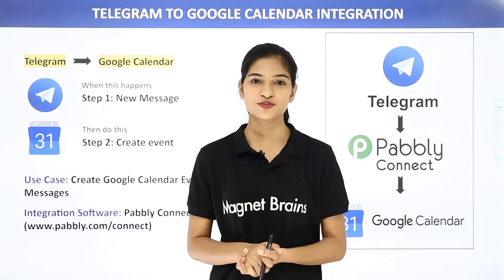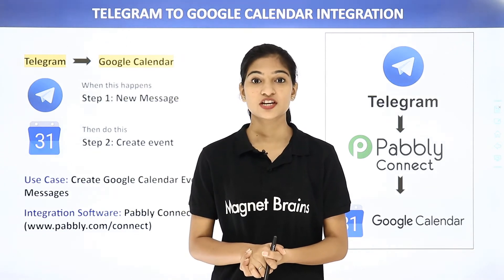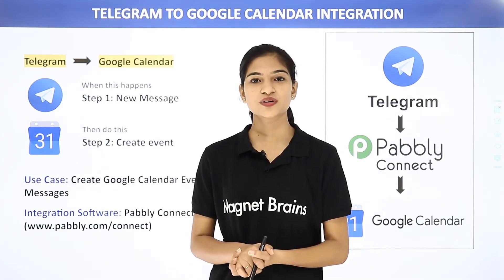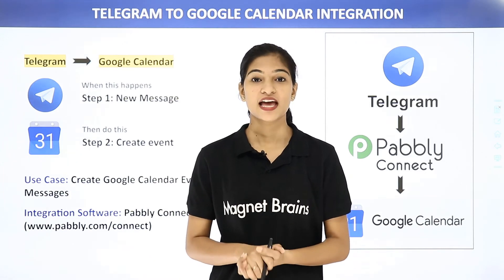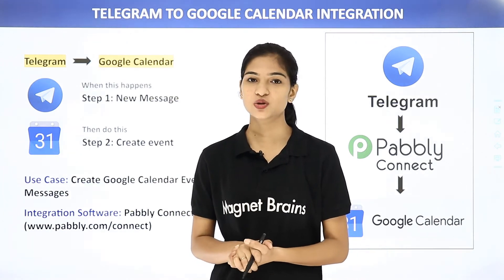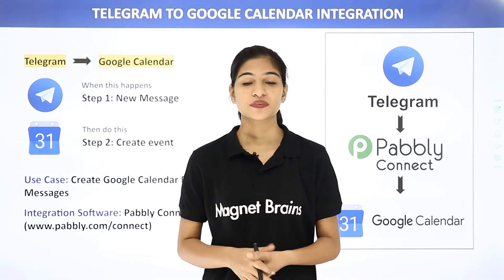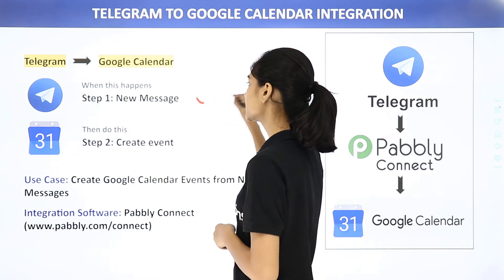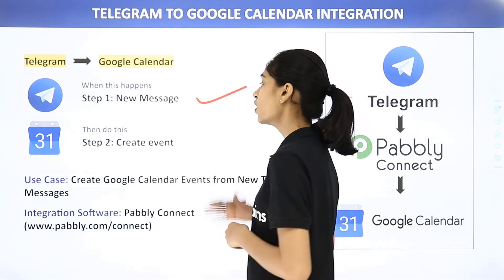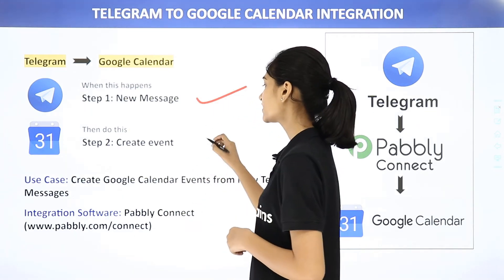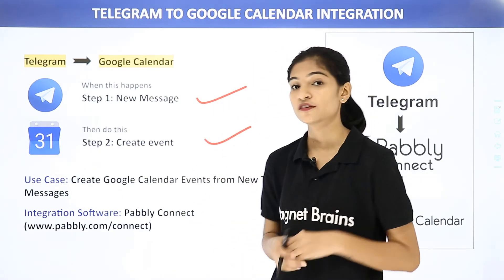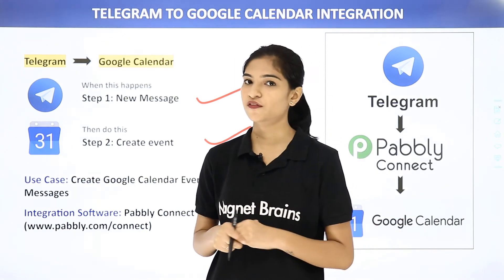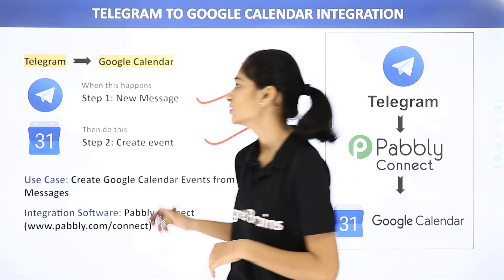Hello everyone, welcome to Pably Connect. Today in this video we are going to integrate two software applications: Telegram and Google Calendar. The use case here is whenever there is a new message in Telegram, we want to create an event in Google Calendar. First let us know what these two software applications are all about.